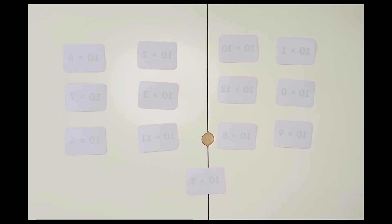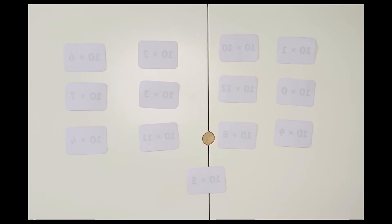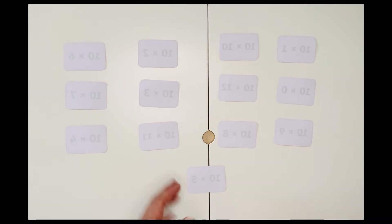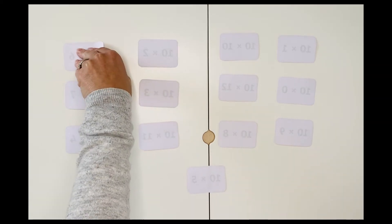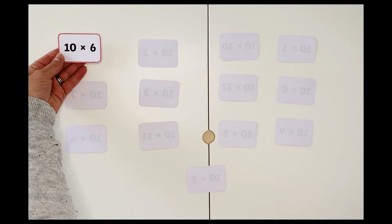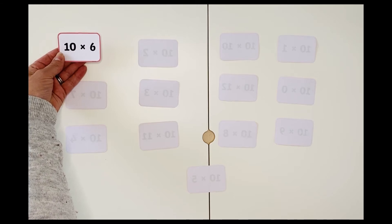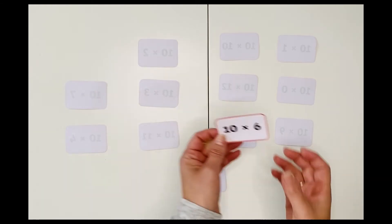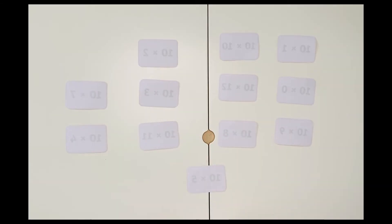With these 10 times tables flashcards, you could put them face down on a table, play in pairs or perhaps small groups, get each child to turn one over — 10 times 6. If they know the answer, 60, they get to keep the card.